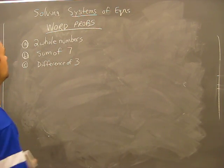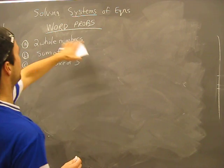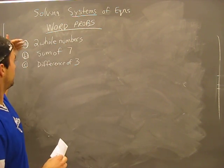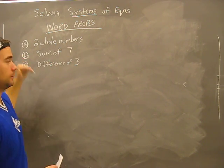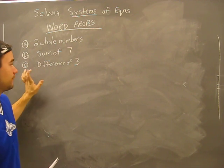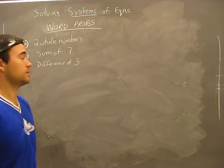Word problems. Here's a word problem: two whole numbers. You're given two whole numbers, the sum of seven and the difference is three. What are the numbers?